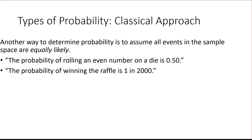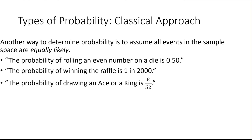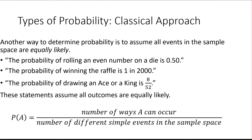If we had a raffle where there were 2,000 tickets sold and you bought one ticket, every ticket has an equal chance of winning, so the probability of winning would be your one ticket out of the 2,000 total. In a card game with a standard deck, there are four aces and four kings, so the probability of drawing an ace or a king would be those 8 cards out of the 52 total. The math is the same: number of ways the event can happen divided by the total — the same logic as the empirical approach, but classical probability comes from a preset scenario where everything is equally likely.